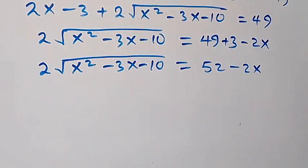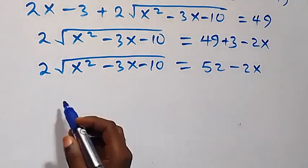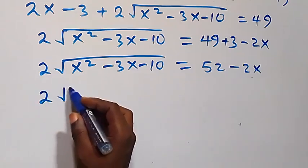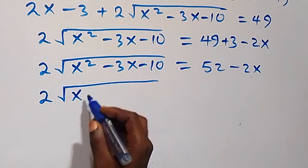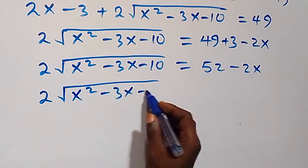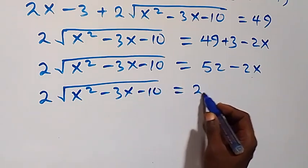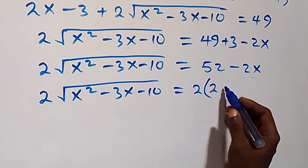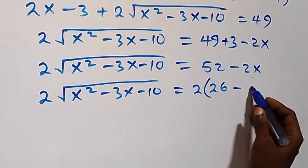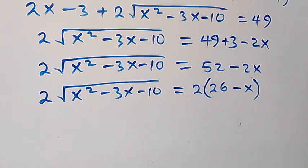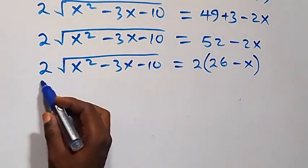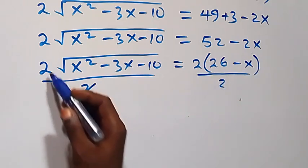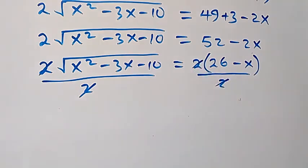We factor 2 out on the right side: 2 times square root of x squared minus 3x minus 10 equals 2 times (26 minus x). Then we divide both sides by 2; the 2s cancel each other, and we are left with square root of x squared minus 3x minus 10 equals 26 minus x.